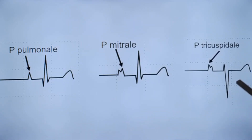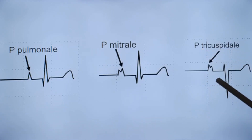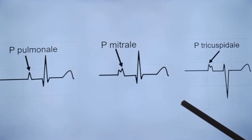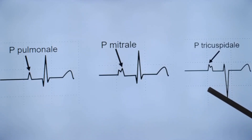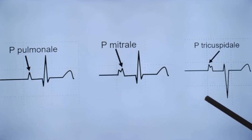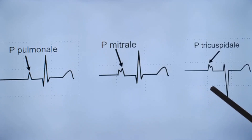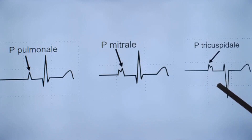P tricuspidale is a peculiar P wave pattern described in biatrial enlargement, but not seen in all types. It was initially described in tricuspid atresia, where the right atrium is overloaded due to no outflow into the right ventricle. For survival, an ASD is required so blood shunts into the left atrium, overloading it as well. Blood then passes into the left ventricle, and via a VSD into the right ventricle and pulmonary artery. Sometimes tricuspid atresia is also associated with pulmonary atresia, in which case lung flow depends on a patent ductus arteriosus.